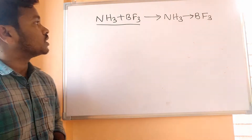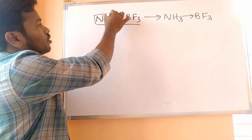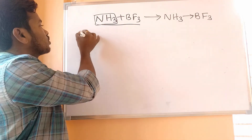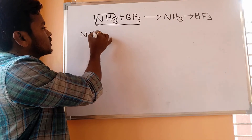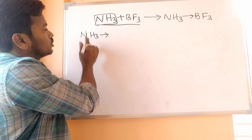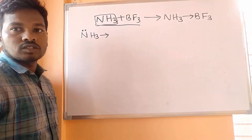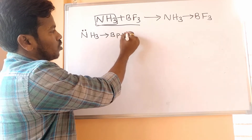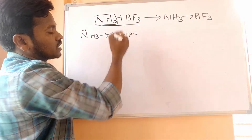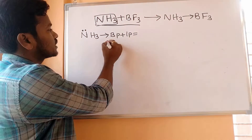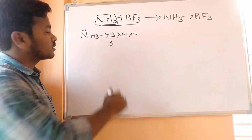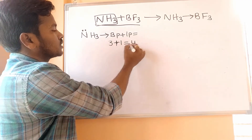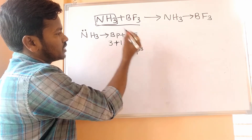Before the reaction, how to find out the hybridization of NH3: the central atom is nitrogen. NH3 is having one lone pair of electrons. The formula is: bond pairs plus lone pairs gives the steric number, which indicates the hybridization. NH3 contains three bond pairs and one lone pair, so the steric number is four — that means sp3 hybridization.